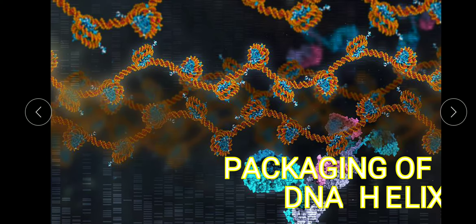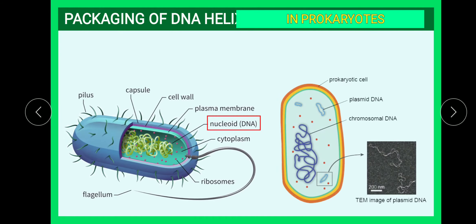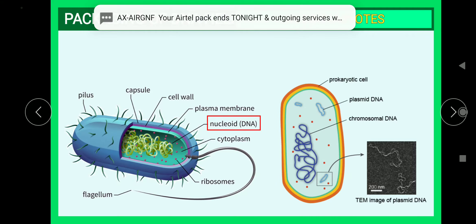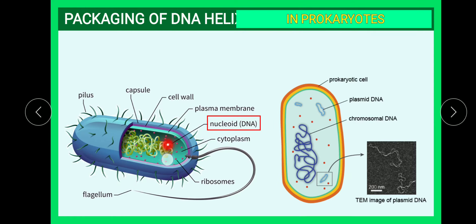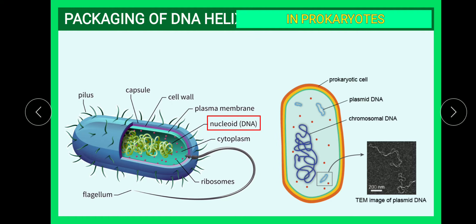In prokaryotic cells, there are no histone proteins. Instead, DNA is packed using positively charged amino acids such as arginine and lysine. The negatively charged DNA is packed by these positively charged amino acids. Prokaryotic cells have a cell wall made of peptidoglycan, plasmids for lateral gene transfer, and a self-replicable DNA region.